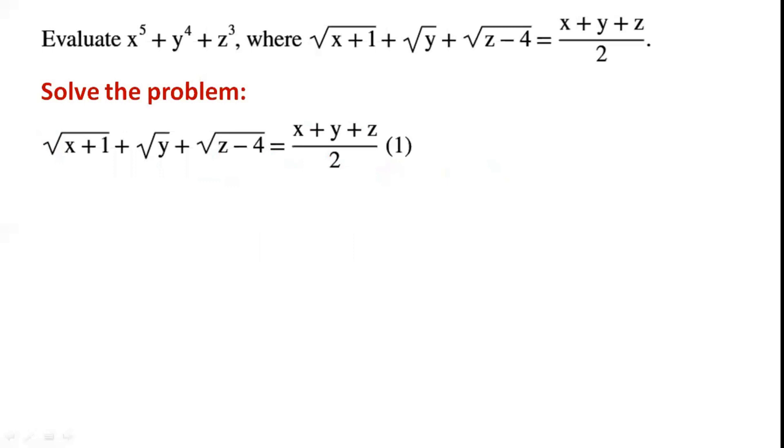We have a radical equation. Normally, the next step is to simplify the equation by removing the radicals, which in this case means raising both sides of the equation to the power of 2. However, in this case, that would be complicated.